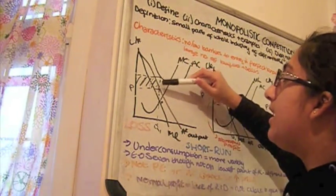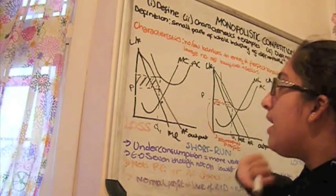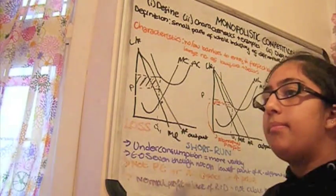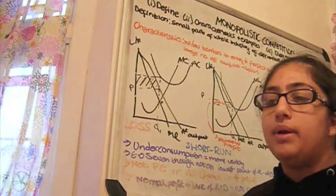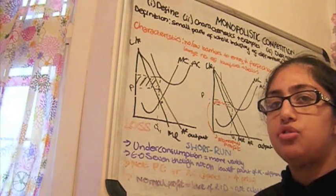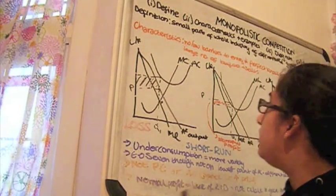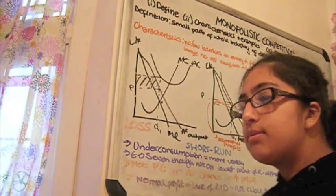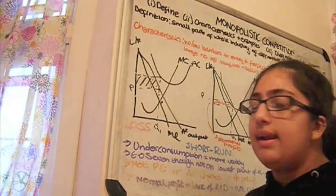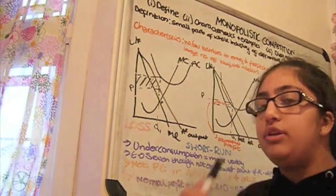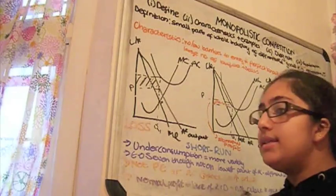Now because people are making losses, people stop joining the Chinese cuisine restaurant industry. Many firms are made to be bankrupt and they leave the industry. Firms will start making abnormal profit. Now how does this happen? Well, when you decrease supply, price rises.